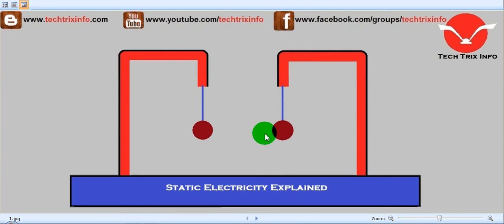After treating them in this fashion or touching them like that, bring them close to each other. Bring these two pit balls close to each other. You can see that they will actually repel each other. They will not attract, they will repel each other.